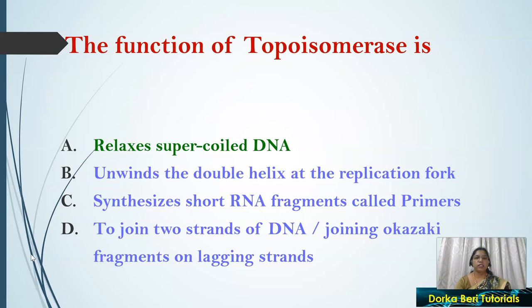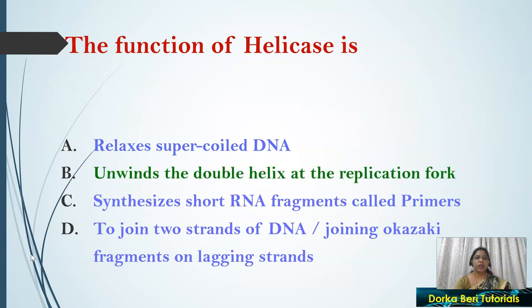The function of helicase is — it unwinds the double helix at the replication fork. The function of primase is — it synthesizes short RNA fragments called primers.